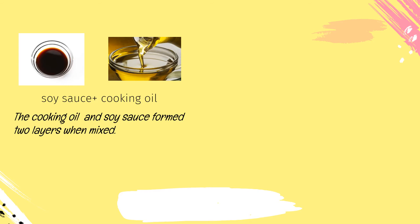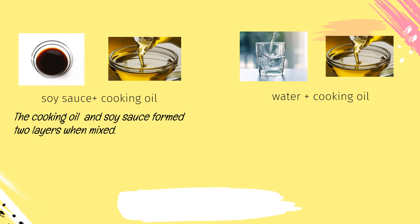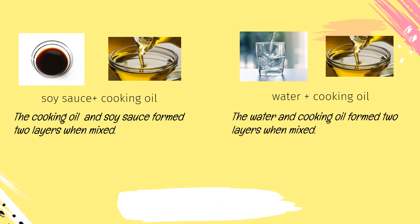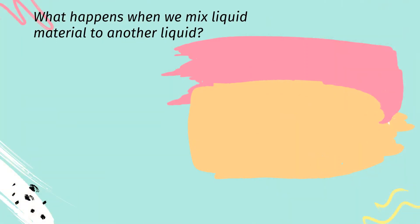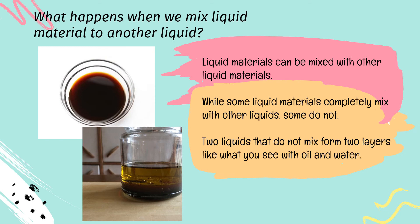Let's try another. How about when we mix soy sauce and cooking oil? The cooking oil and soy sauce form two layers when mixed. How about water and cooking oil? The water and cooking oil also form two layers when mixed. One material can be distinguished or identified from the other, thus it is a heterogeneous mixture. Two liquids that do not mix form two layers, like what you see with oil and water.